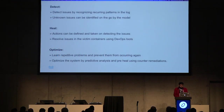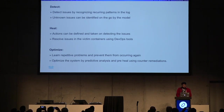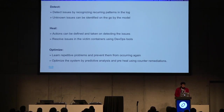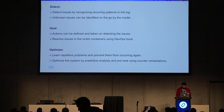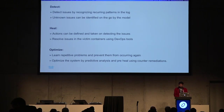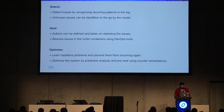In the detect cycle, we try to detect issues by recognizing the recurring pattern in the log. As the model gets more trained, it will try to identify unknown issues as well and categorize them. The next action is a heal action — as and when we detect an issue, some kind of script or DevOps tool talks to the container system and tries to heal it. The final step is to optimize: as these training models get more trained, they will figure out even before a problem is happening that such a problem may occur in future, and try to fix it proactively. This is where we want our AI engine to reach.